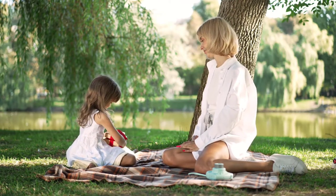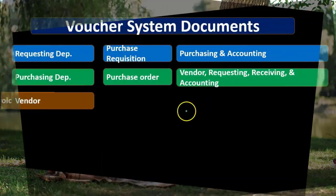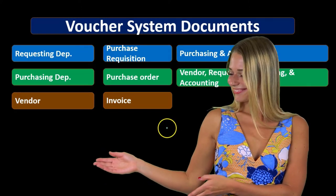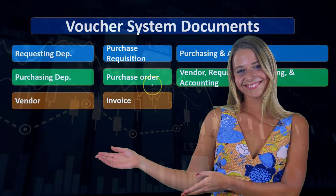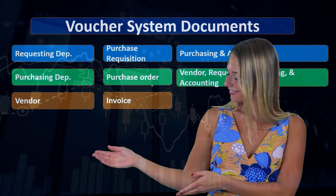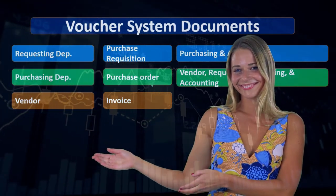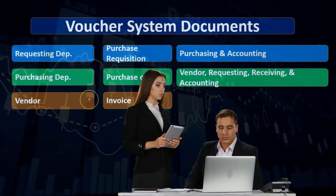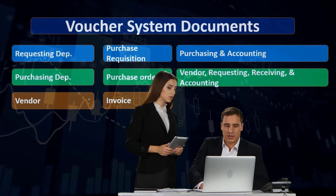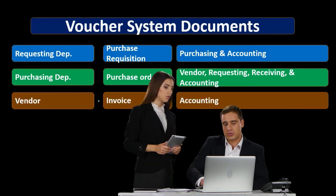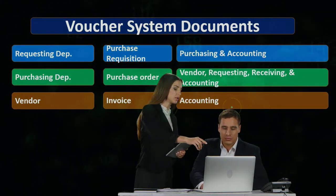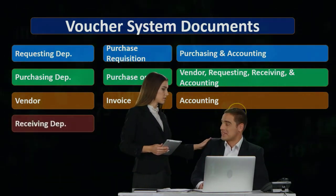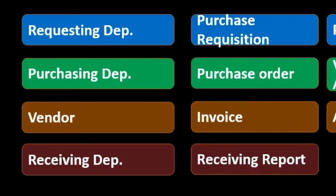The accounting department will be recording this information. The vendor will then provide the invoice to us. Notice it's a bit different than buying from Amazon, where we make payment before receiving goods. Here, we send the purchase order and then the vendor sends the invoice, possibly at the same point we receive the goods. The invoice goes to accounting, and the receiving department creates a receiving report indicating they received the actual item.